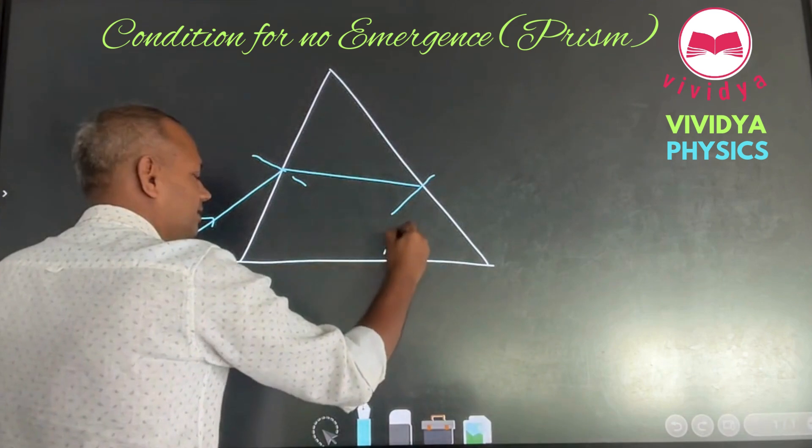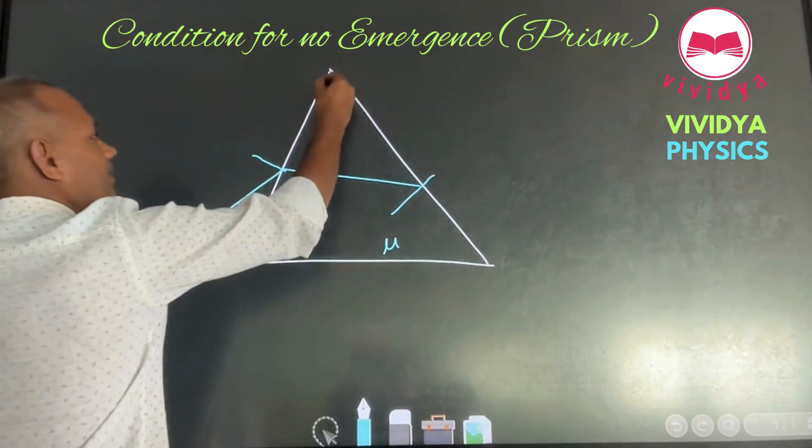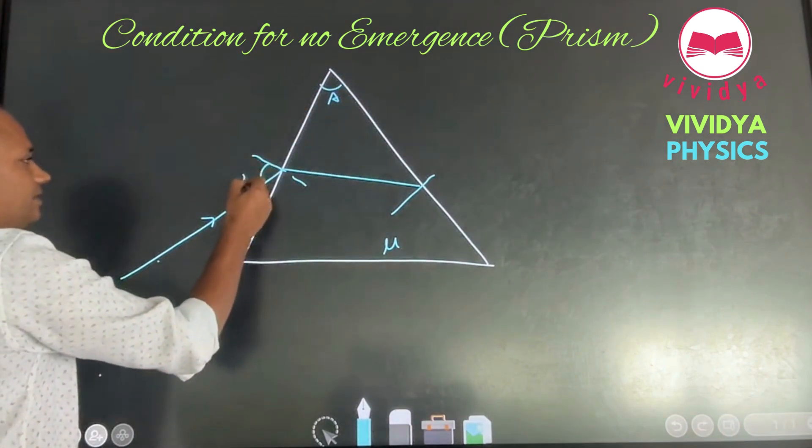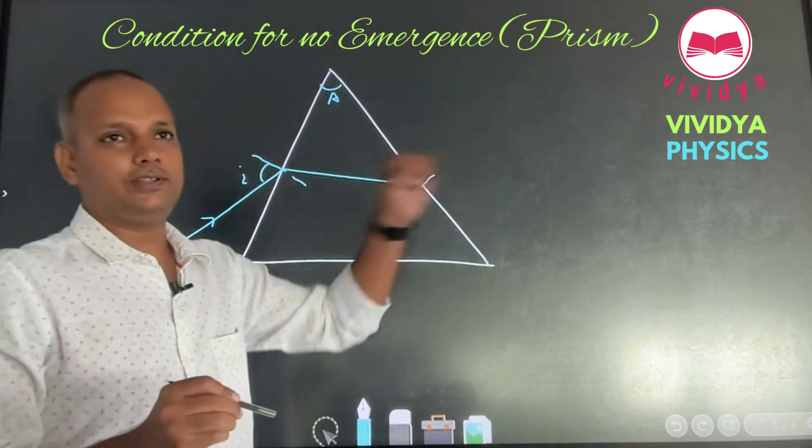Suppose refractive index is mu, angle of prism is A. Whatever is the eye here, no light should emerge from here.